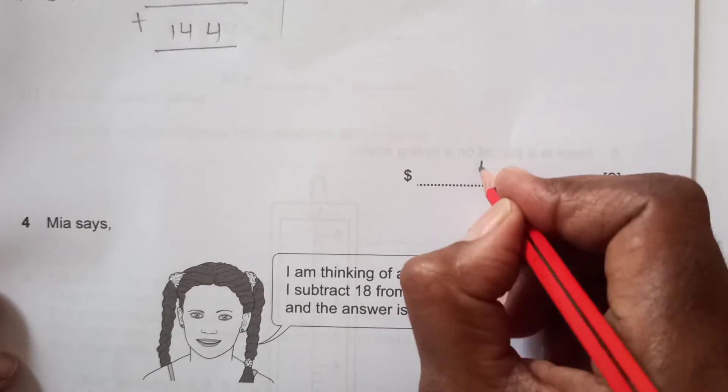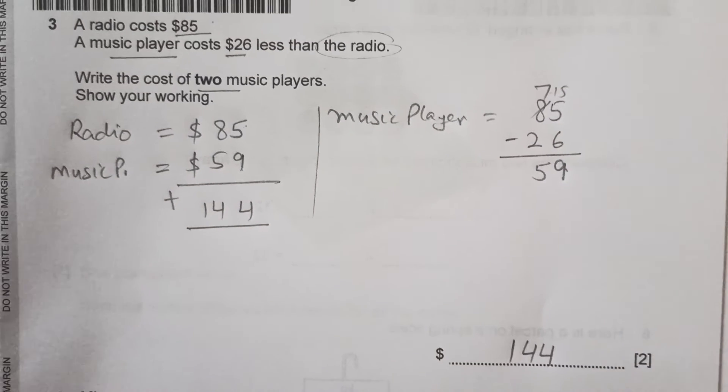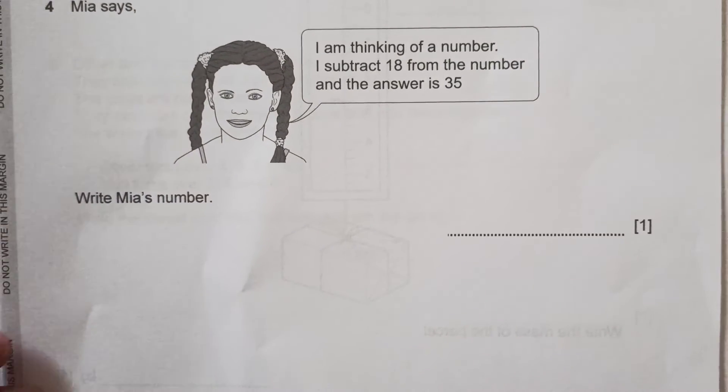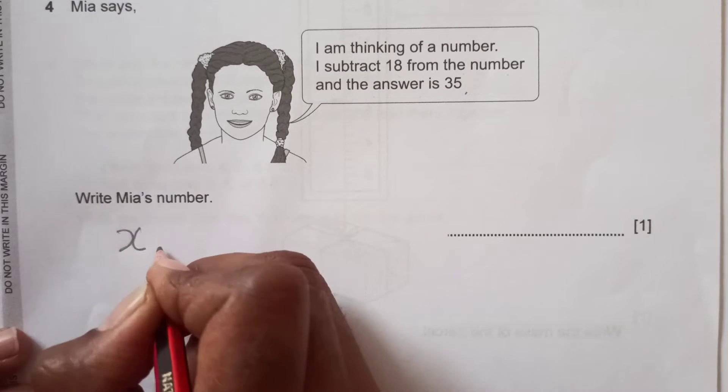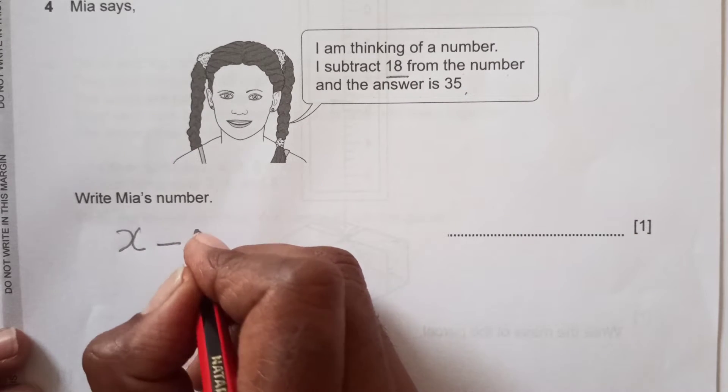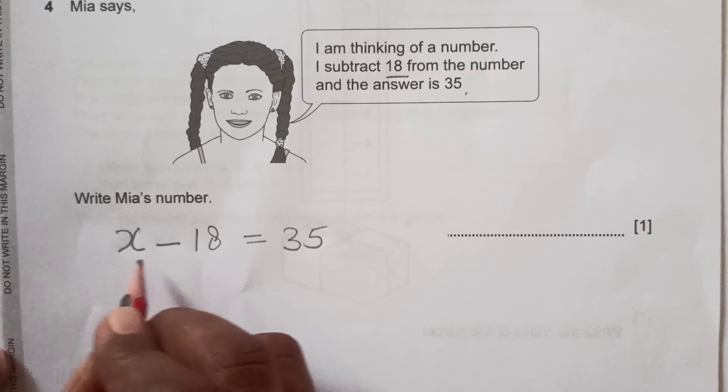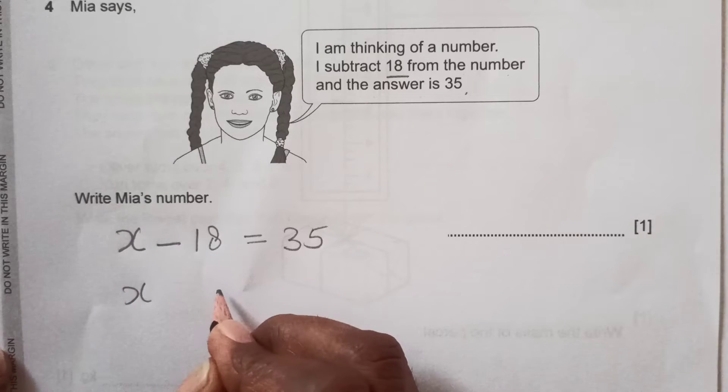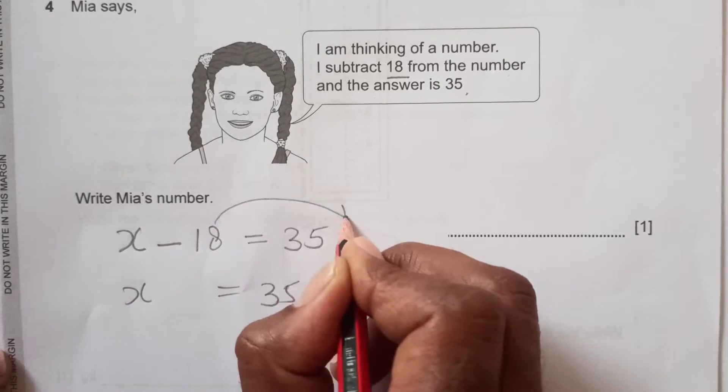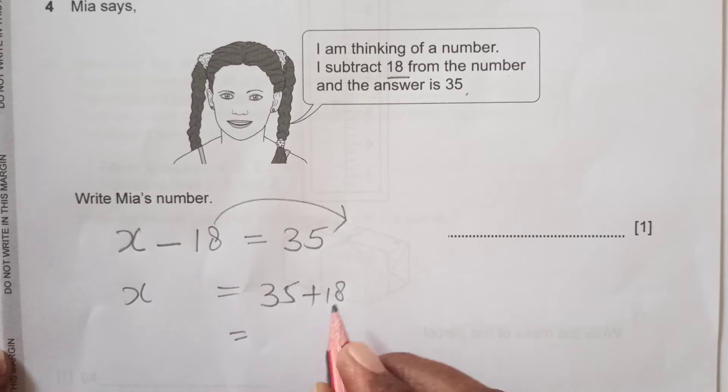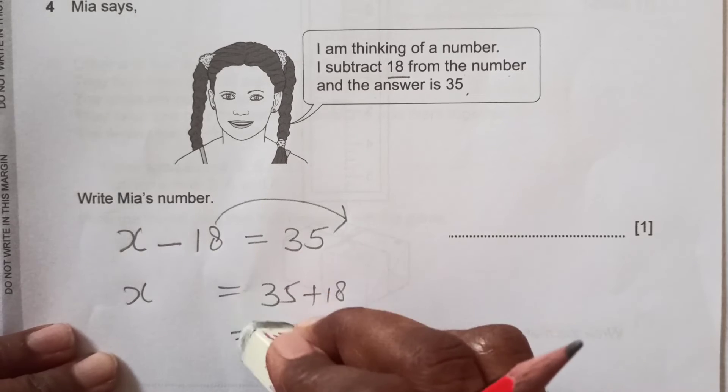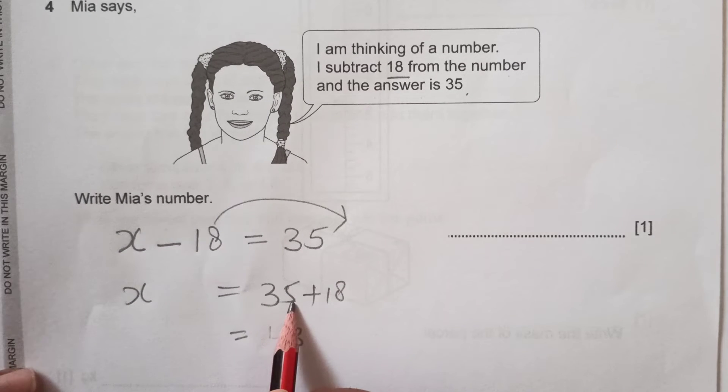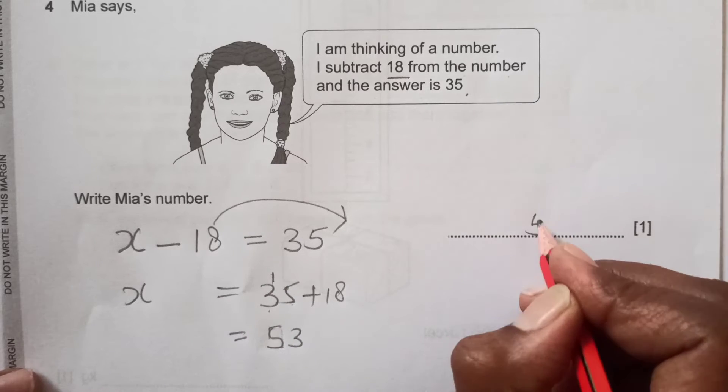$144, so $144 is the cost of both radio and the music player. Number 4: Mia says, 'I'm thinking of a number. I subtract 18 from the number and the answer is 35.' So let's say Mia's number is x. She subtracted 18 from the number and the answer is 35. So to find the value of x, x is going to be 35 plus 18, which is 53. 8 plus 5 is 13, then one carry, so this is 53. Final answer is 53.